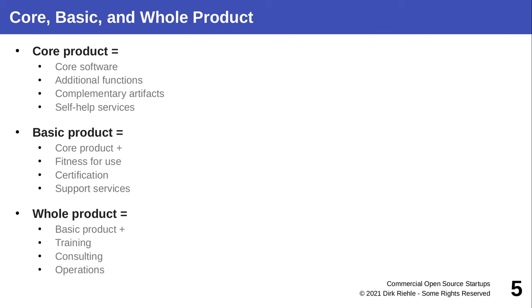Here is the basic model for software products in this course, based on extension stages of what constitutes a software product. There's a core, which you start with; then based on the core you build a basic product; and eventually you have a whole product. This aligns with the life cycle of a software startup — you cannot do everything at once, you need to make choices, and you're advised to start with a core product first and build it out. Different customers buy at different times given how complete your product is.